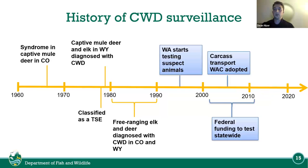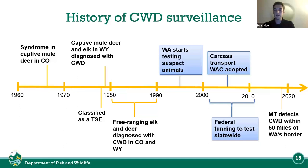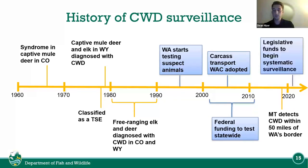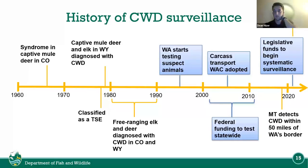In the early 2000s the carcass transport WAC was also adopted, limiting the transfer of carcasses between state lines. In 2019 Montana detected CWD within 50 miles of our Washington border. In 2021 legislative funds began systematic surveillance — that's how we have our chronic wasting disease technician jobs and check stations throughout the east side of the state. Idaho also detected CWD for the first time in 2021.